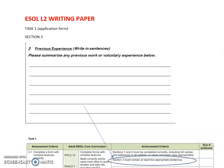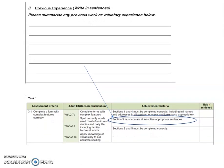Before I attempt to answer this question, I'm just going to draw your attention to the marking criteria. So in Section 3, which is what we're talking about here, Section 3 must contain at least five appropriate sentences. So obviously you will be writing more than five sentences, but your examiner will be looking at five to be written at an appropriate level.